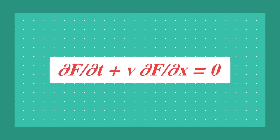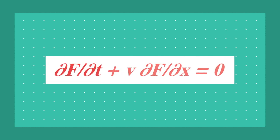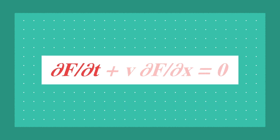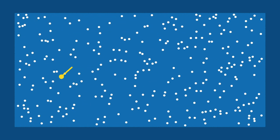In the absence of collisions, the evolution would be given by this partial differential equation relating the change in the function over time and space. Taking into account collisions between particles, however, dramatically complicates this equation.